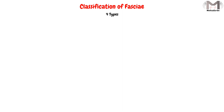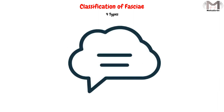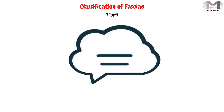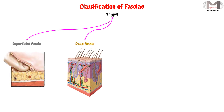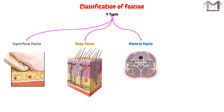Now we have to talk about the classification of fascia. In fact, the fascia is classified into four types, and I will mention them only without details, because in the upcoming videos we will explain them in depth. The fascia is classified into superficial fascia, deep fascia, visceral fascia, and parietal fascia.